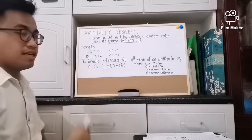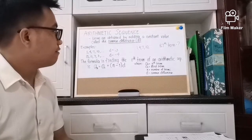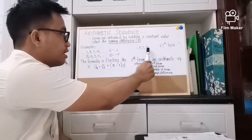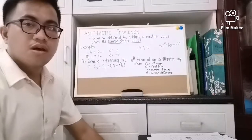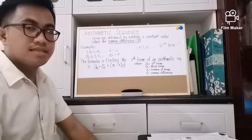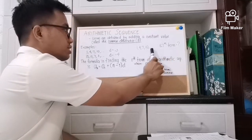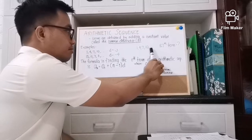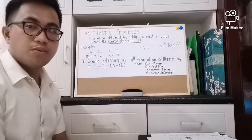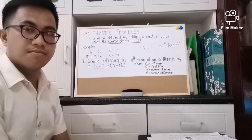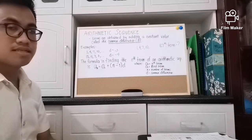If we have the sequence 1, 4, 7, 10, and so on, and I ask you what is the 87th term — to answer that we can simply do basic addition by continuing the sequence, adding the common difference 3 each time: 13, 16, 19, and so on. But doing that process could consume a lot of time, so here I'm going to introduce the formula for finding the nth term of an arithmetic sequence.